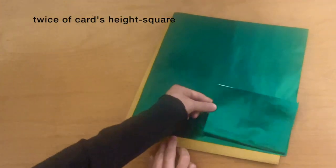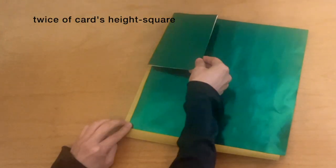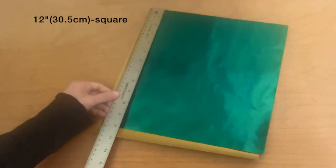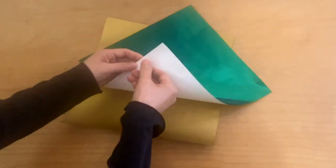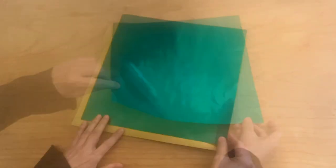Use two sheets of square paper, the size of twice the height of the card, or 12 inches. Secure the two pieces of paper slightly shifted with double-sided tape.